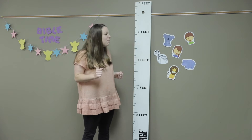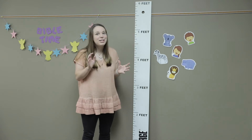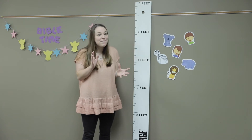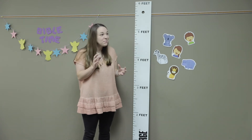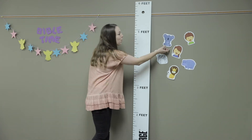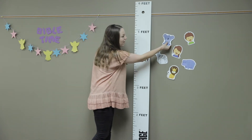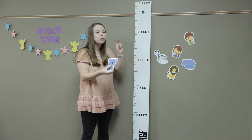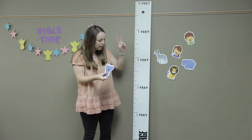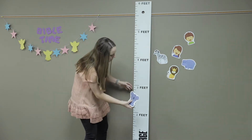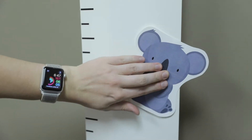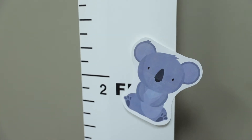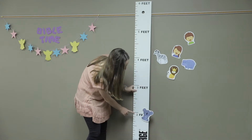Which animal do you think is the next tallest? It's an animal that's really furry and fuzzy — it's the koala bear. A koala bear is about two feet tall, so we're going to put him right next to the two feet mark, right here.